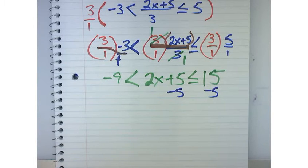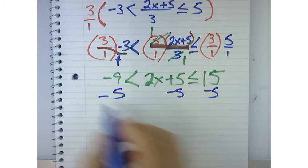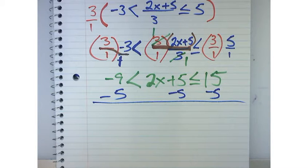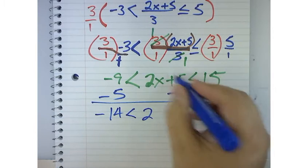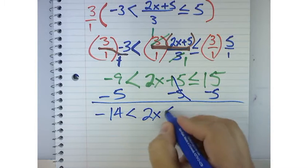No. I've got to do it to everything, right? So what's negative 9 minus 5? Negative 14 is less than 2x, because these go away and become 0, is less than or equal to 10.